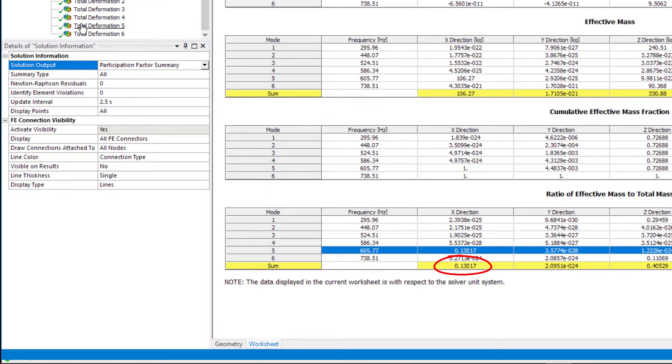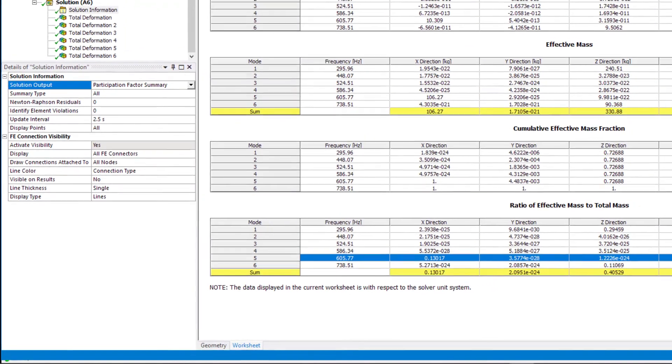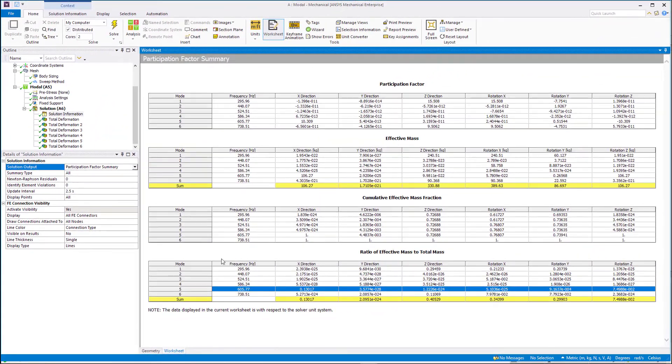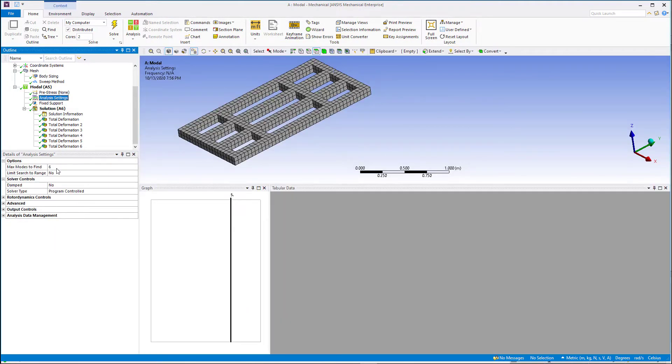The sum of the effective mass is a good indicator if enough modes are extracted. The effective mass in each direction should add up to the overall mass of a structure, but that would depend on how the structure is constrained. Let's see what happens if we extract 200 modes.